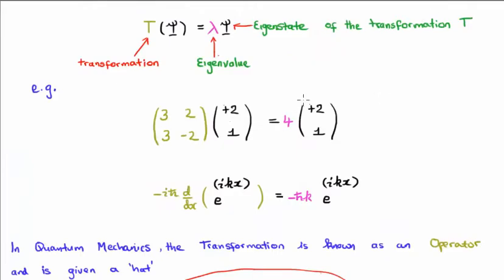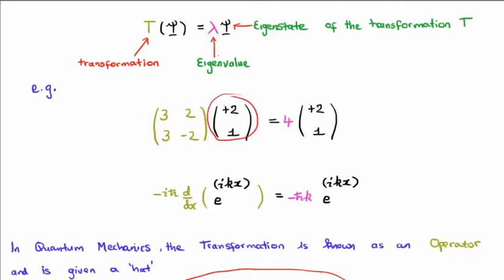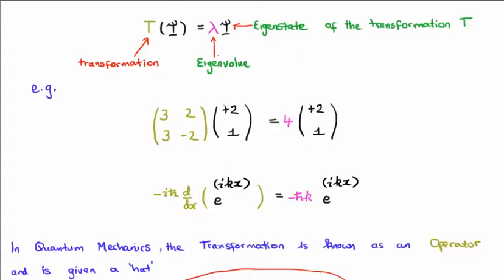Let's give you some examples. In the center of your screen we have our linear transformation in matrix notation: 3, 2, 3, minus 2. It acts on our eigenstate which is the column matrix 2, 1. And it produces the same column matrix 2, 1 with a multiplicative constant 4 — which is of course the eigenvalue. So 4 is the eigenvalue of our linear transformation, and the column matrix 2, 1 is the eigenstate of our linear transformation.